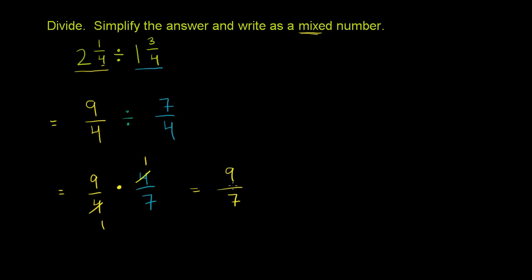So we have our answer, but right now it's an improper fraction. They want us to write it as a mixed number. And to figure it out as a mixed number, and we can do it in our heads now, I think we've seen this enough times, we say how many times does 7 go into 9?